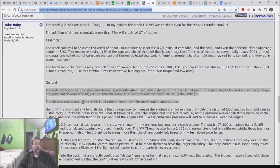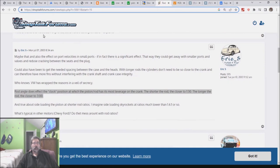The Ricardo rule states that a 1.75 to 1 rod ratio is optimum for most engine applications. The rod angle does affect the clock position at which the piston rod has its most leverage on the crank. The shorter the rod, the closer to 1:30. The longer the rod, the closer to three o'clock.